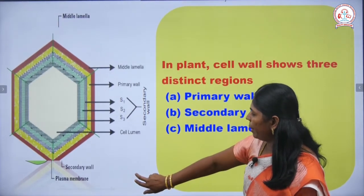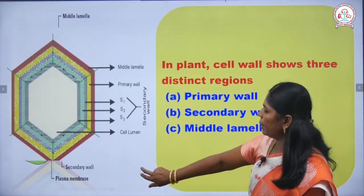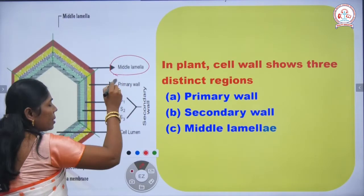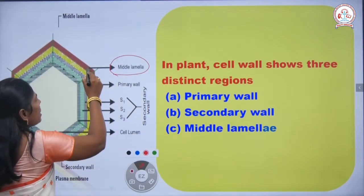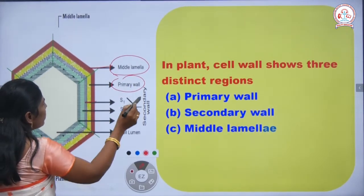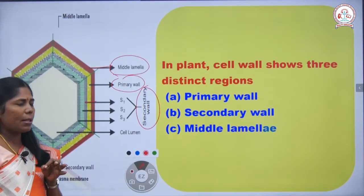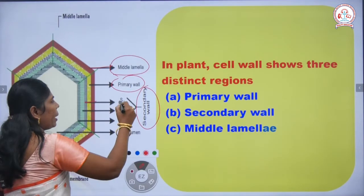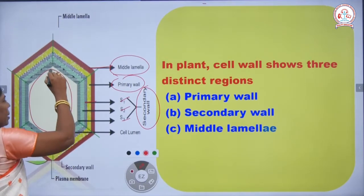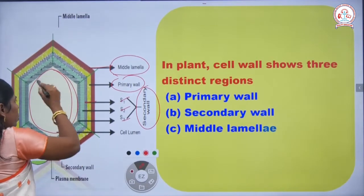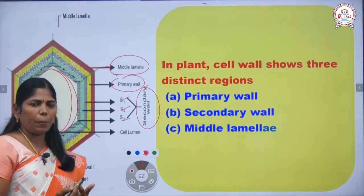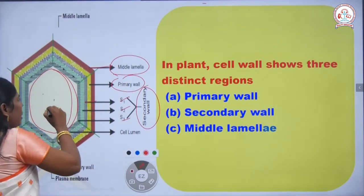The middle lamella is present between the cells. Next to the middle lamella is the primary wall, and next to the primary wall is the secondary wall. The secondary wall is differentiated into three sub-layers: S1, S2, and S3. Next to the secondary wall, we can see the cell cavity — the cell lumen — where all the cell organelles, cytoplasm, and protoplasm are present.